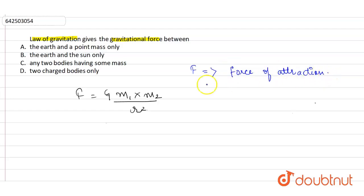And m1 and m2, these are the masses of the two objects. And r is the distance between them, right?